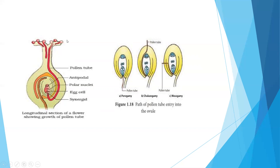The pollen grain consists of two walls: the outer is the exine and the inner is the intine. At the time of germination, the exine ruptures and the intine comes out in the form of a pollen tube. Generally only one pollen tube is produced per pollen grain, and it is called mono-siphonous. In some cases the pollen grain produces more than one pollen tube, and the pollen grain is called polysiphonous.